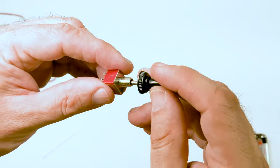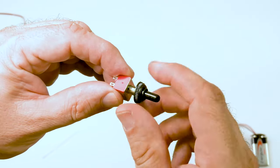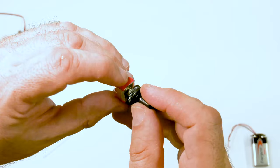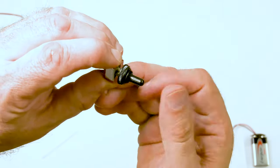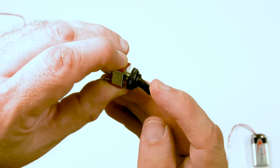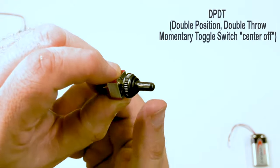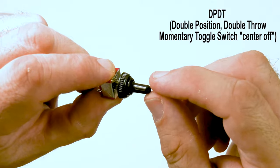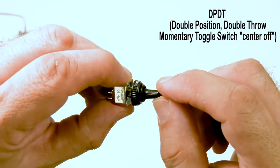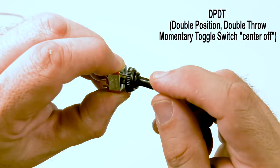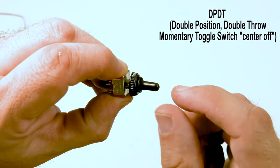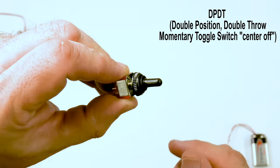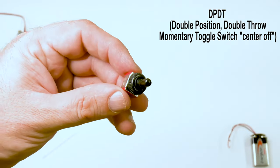Also, you get these really nice little caps. So once you put your toggle through your control panel, you screw these on and they're nice. It gives you a nice finished look. There's little extra pieces depending on how thick your control panel is. But this is the center off. These are the double position, double throw momentary toggle switches. And that's how you do it. Pretty cool.